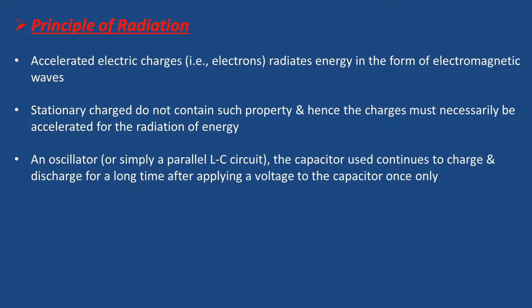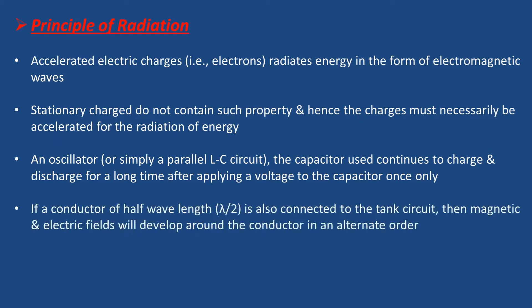The capacitor will continue: once it has full charge, we connect with the inductor in parallel, and it will start to discharge in the opposite direction through the inductor. Electric charges alternate between capacitor positive and negative, producing a continuous AC wave output. If a conductor of half-wave length, i.e., lambda divided by 2, is connected to the tank circuit, then magnetic and electric fields will develop around the conductor in alternate order.